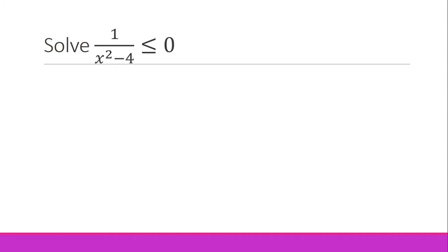Once you have a single term on the left side and zero on the right side, you automatically equate your numerator and denominator to zero. But upon checking, your numerator here contains 1. Equating that 1 to zero means no solution, so we don't bother equating our numerator to zero.